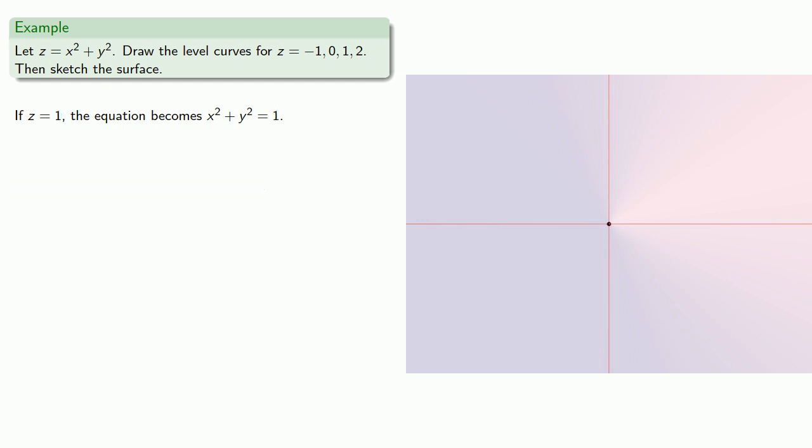If z is equal to 1, the equation becomes x squared plus y squared equals 1. And we recognize this as a circle with radius 1 centered at the origin. And we can graph it.